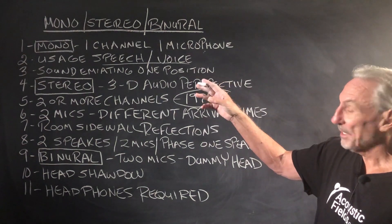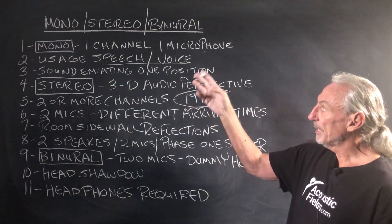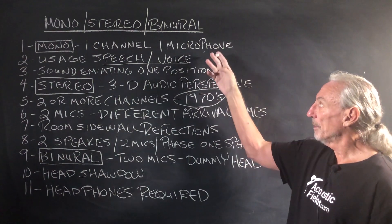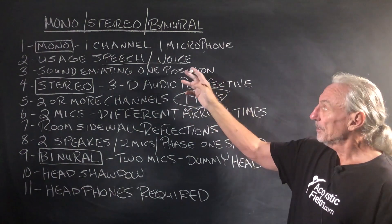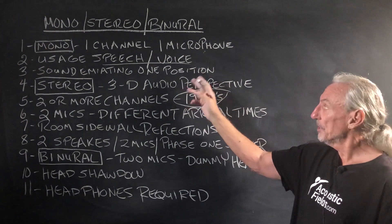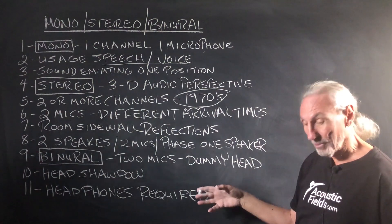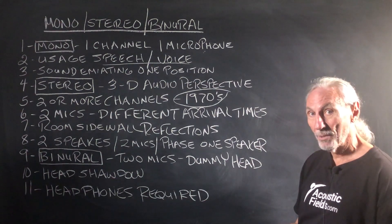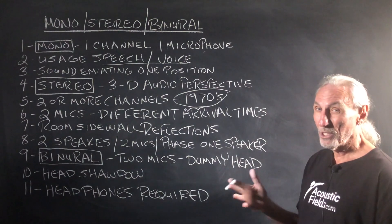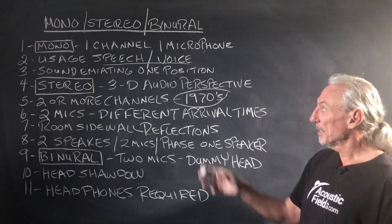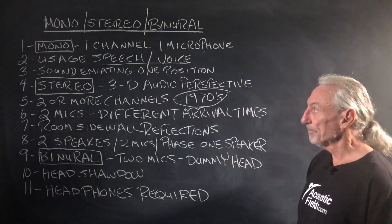So mono — let's break it down and see if we can get the differences, get a feel for it. Mono is one channel, one microphone. You can use multiple microphones for mono, but it's one position, sound emanating from one position. If you use multiple microphones, you're going to sum anyway to a center position. So mono is usually one channel, one microphone — one source, sound emanating from one source.